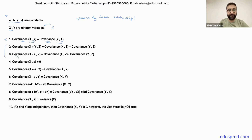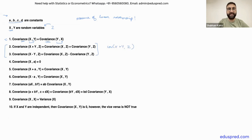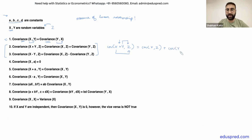Let's take a look at property number 2 and property number 3. These two properties show a splitting mechanism — how to split the terms. If you have the covariance of X plus Y with Z, where X, Y and Z are all random variables, the splitting mechanism works as follows: this is equal to the covariance of X with Z, plus the covariance of Y with Z.